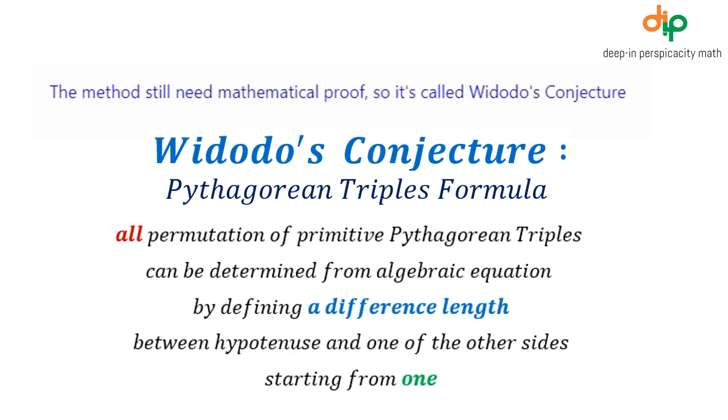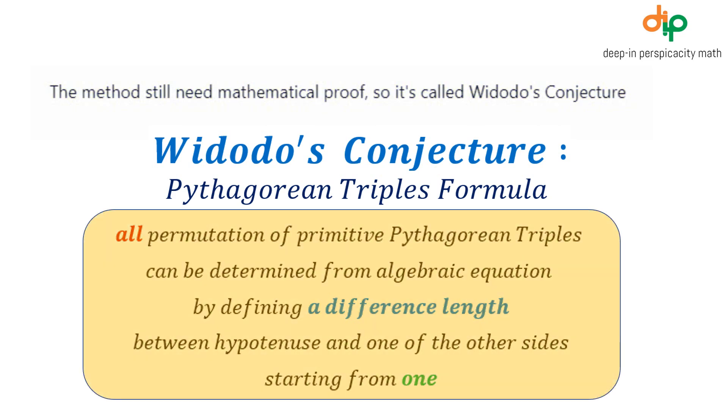The method still needs mathematical proof, so it's called Widodo's conjecture. All permutation of primitive Pythagorean triples can be determined from algebraic equation by defining a difference length between hypotenuse and one of the other sides, starting from one.